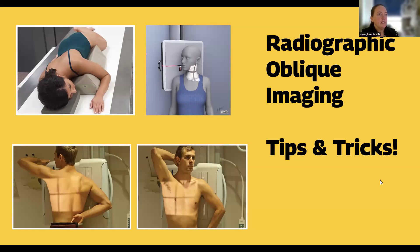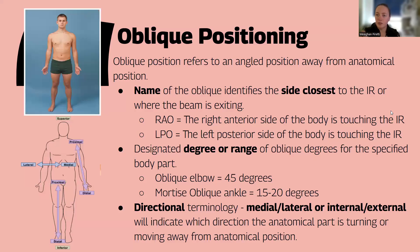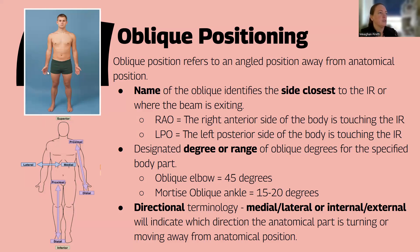Oblique positioning simply means that the patient is in some version of a degree of turning away from or towards the starting anatomical position, which you already know. Anatomical position is straight on, palms out facing in front of you.